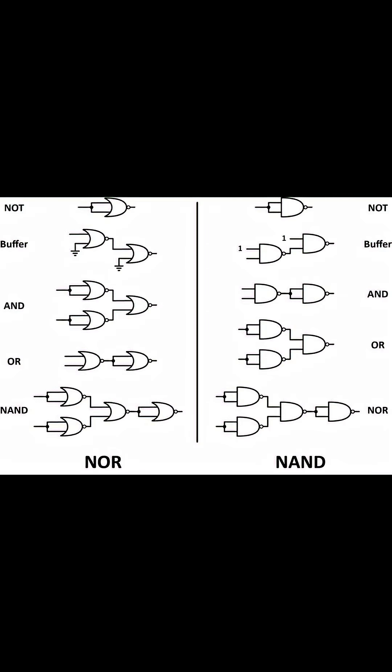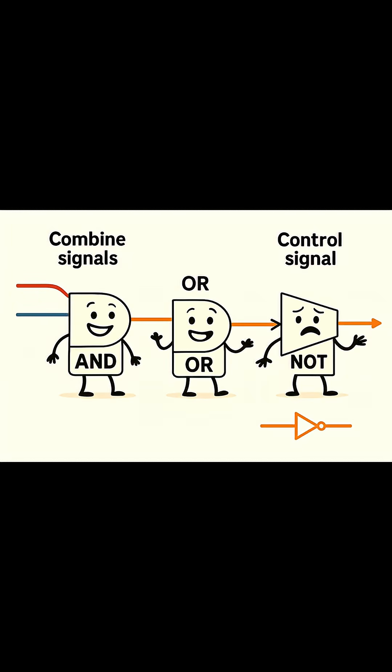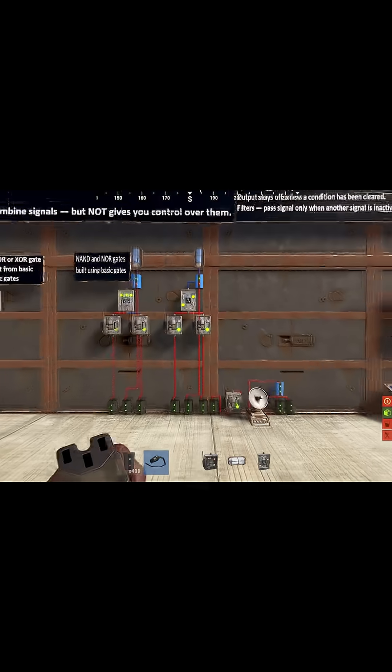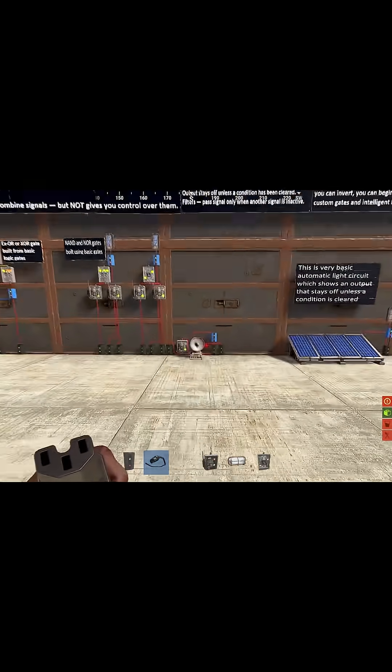In short, AND and OR combine signals, but NOT gives you control over them. Some common uses before adaptation.